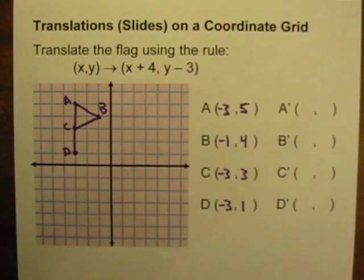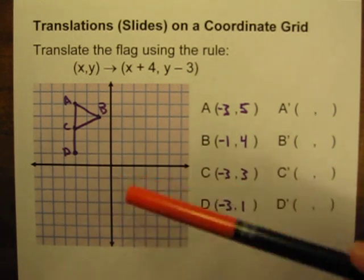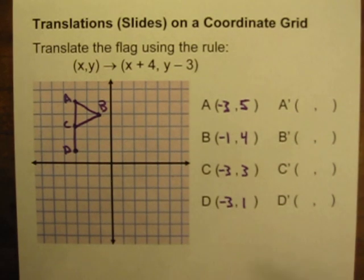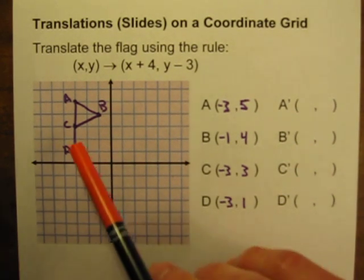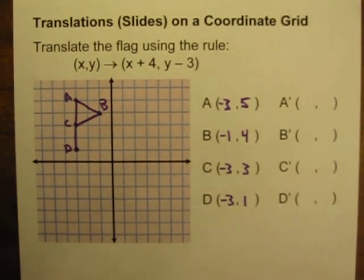Hello. The task this time is to perform a translation on a coordinate grid, meaning here's a graph. We're going to do a translation of this little flag shape on the graph.